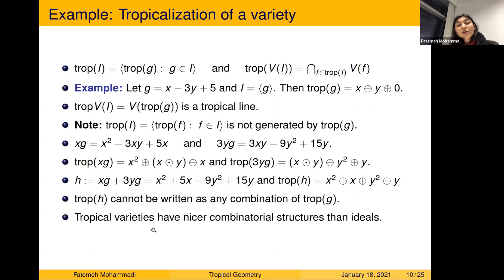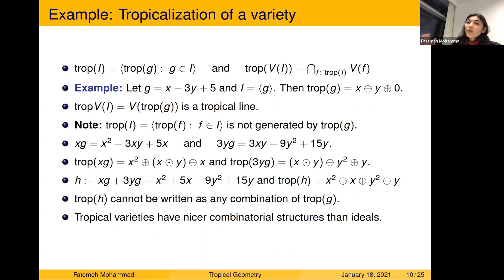The point of this example is: starting from a single-generator ideal, the tropical ideal cannot be generated by that one polynomial's tropicalization, and you need to add more elements. However, even though the tropical ideal can be very complicated to describe in terms of generators, the corresponding tropical variety is still just the simple tropical line.